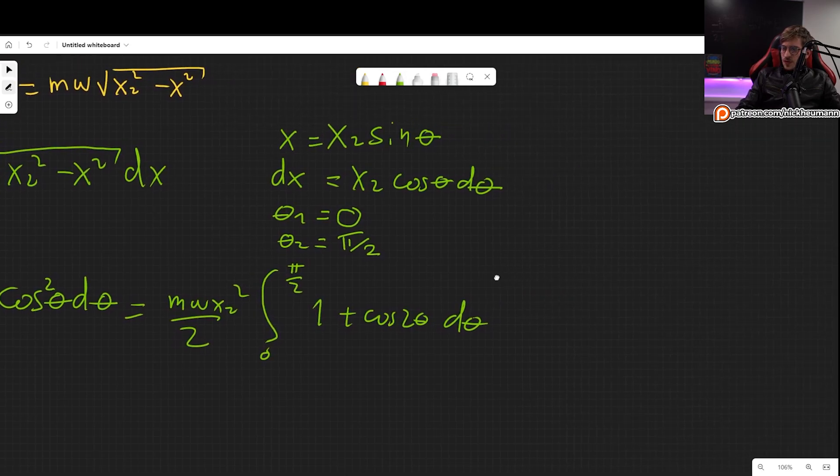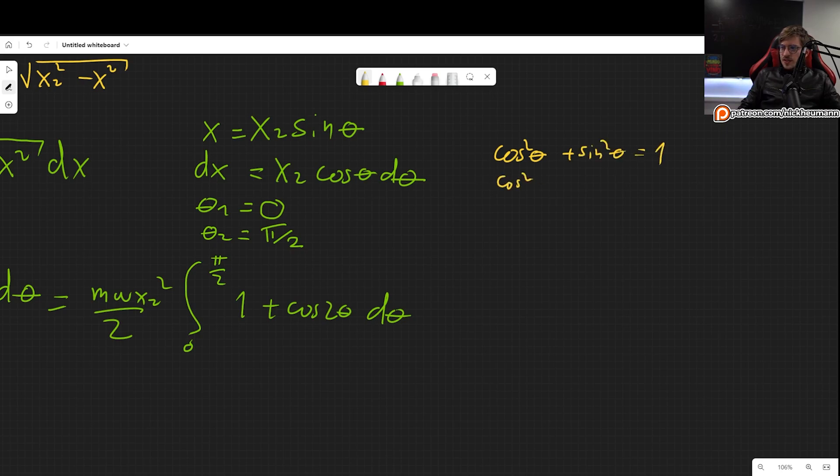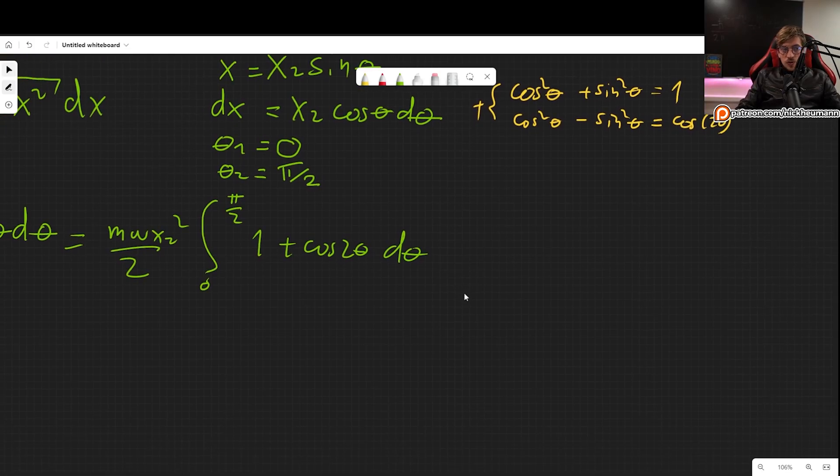And this is of course something you have to know, that trigonometric identity. It comes from cosine squared plus sine squared is equal to 1, and also cosine squared minus sine squared has to be equal to the cosine of 2 theta. So you add these two together and you get the formula that I just used. You have to know that identity. It is super important because this sort of integral shows up all the time.